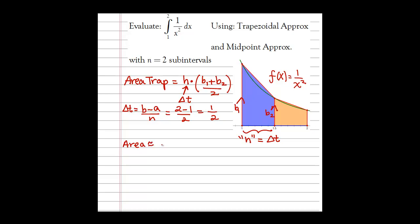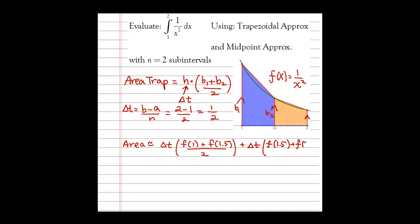The area is going to be the sum of the blue trapezoid plus the orange trapezoid. For the blue trapezoid, we take delta t times (base 1 plus base 2) over 2, where the bases are the heights at my left endpoint and at 1.5. Then we add the orange trapezoid: delta t times the height at 1.5 plus the height at 2, all over 2.